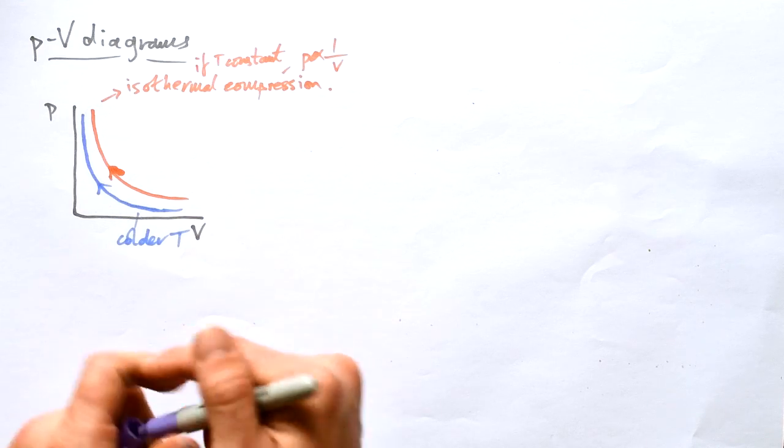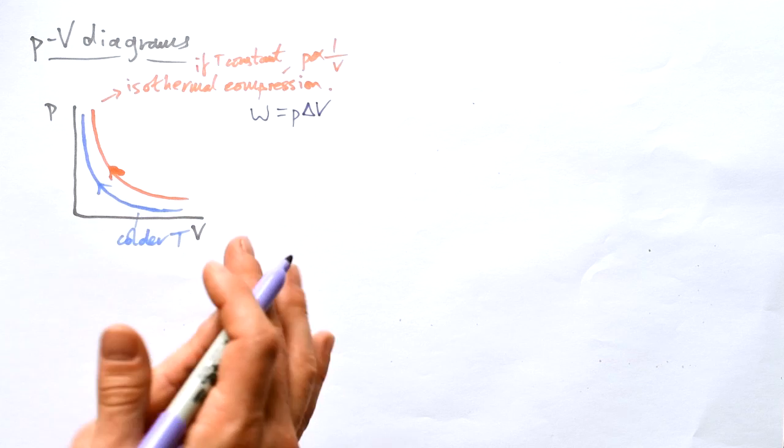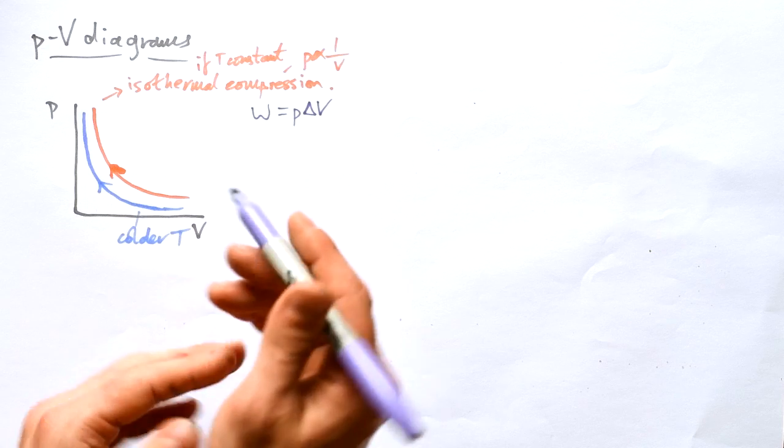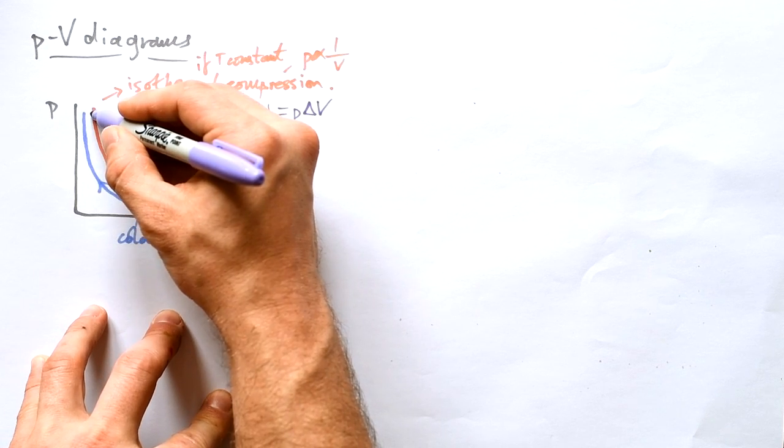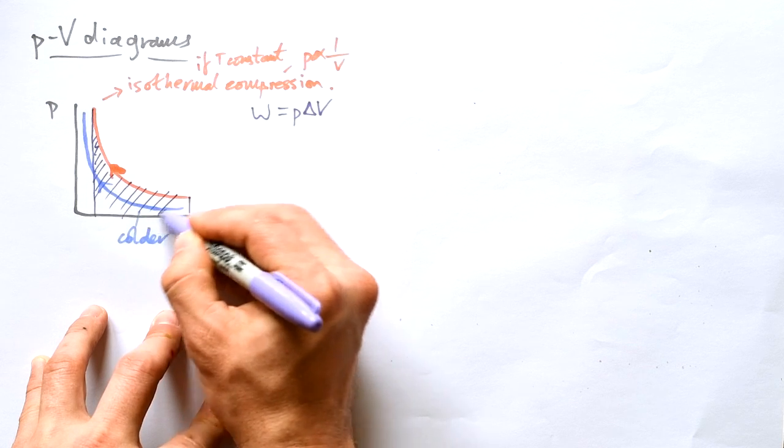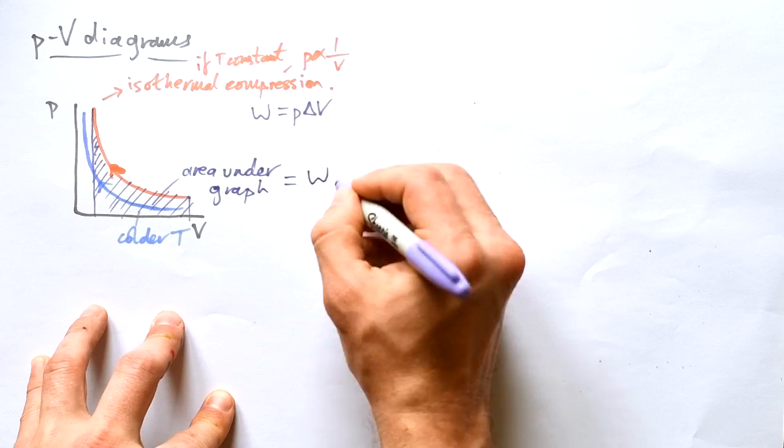Now we said that work done is equal to P delta V, and so times in pressure and volume together. So what part of this graph gives us work done on or by the gas? It's the area under the graph.